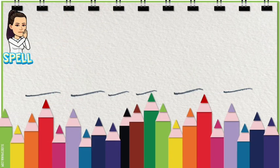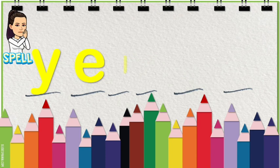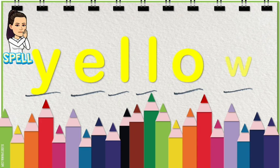The first color that we will talk about is color yellow. Let us first spell the word yellow. Spell it with teacher: Y, E, L, L, O, W.